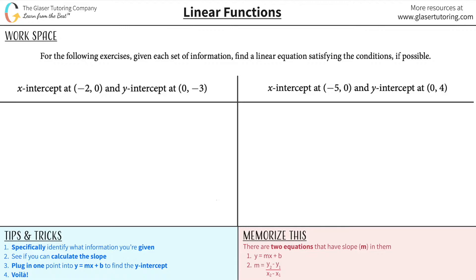For the following exercises, given each set of information, find a linear equation satisfying the conditions if possible. They give us some information about this particular function. They say that the x-intercept is negative two zero and the y-intercept is zero comma negative three.